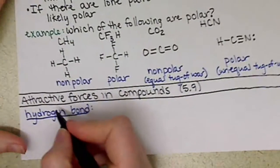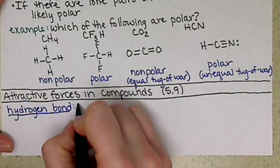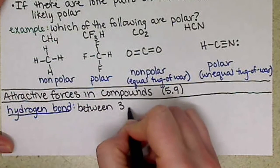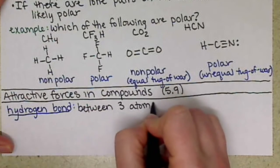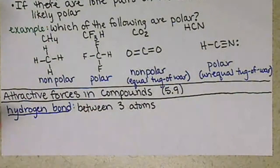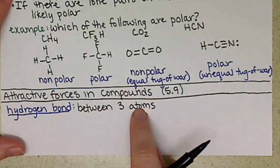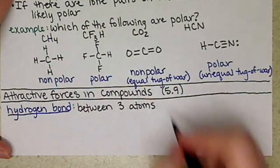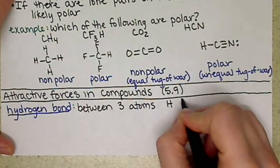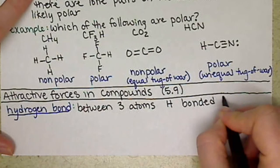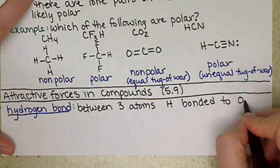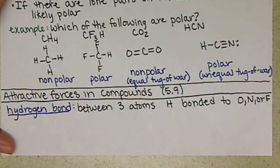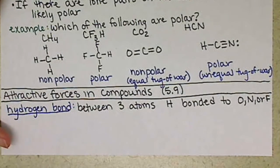We have the hydrogen bond between three atoms, and this is a very specific bond. Our three atoms are very specific. We are going to have a hydrogen bonded to oxygen, nitrogen, or fluorine. Those are the only three possibilities.